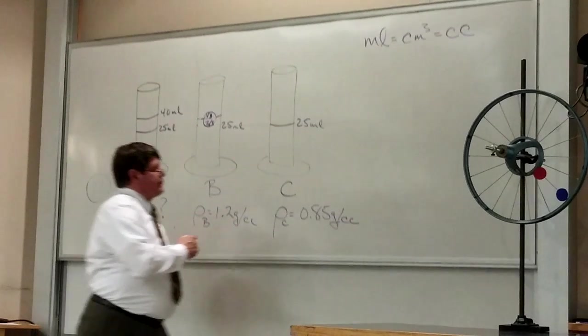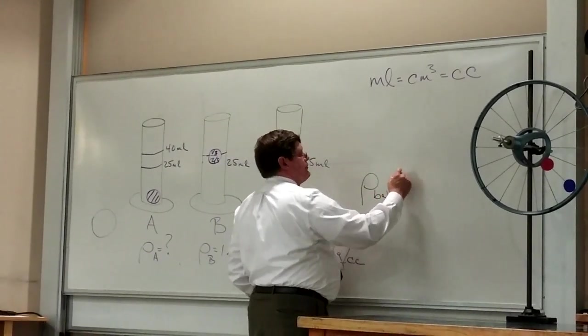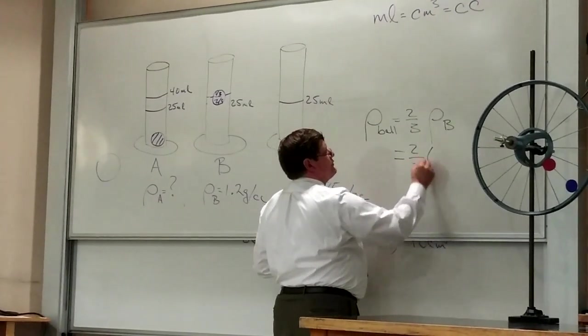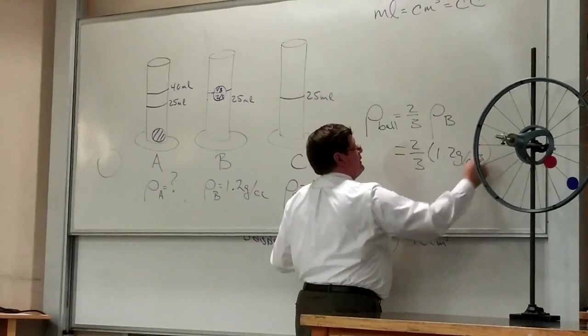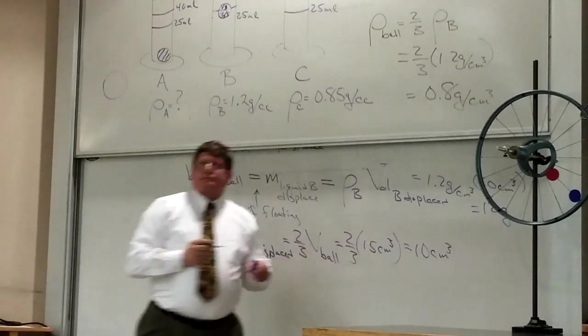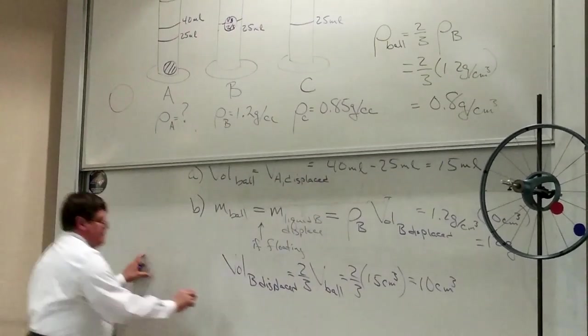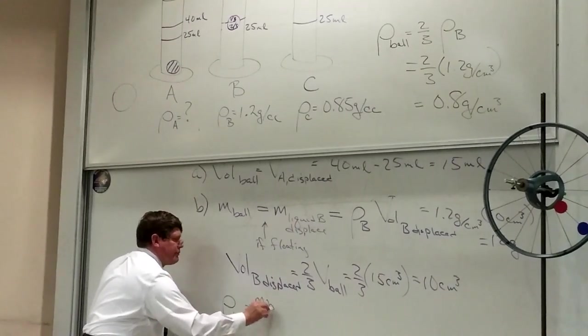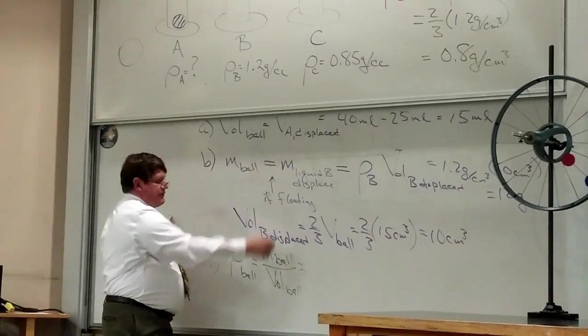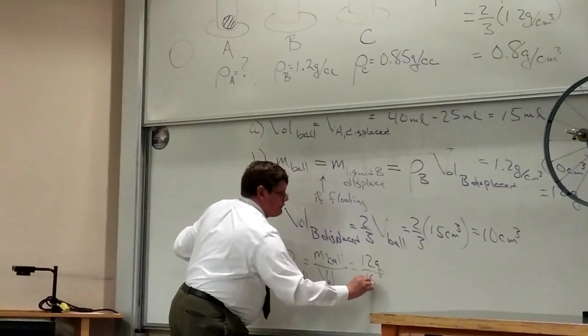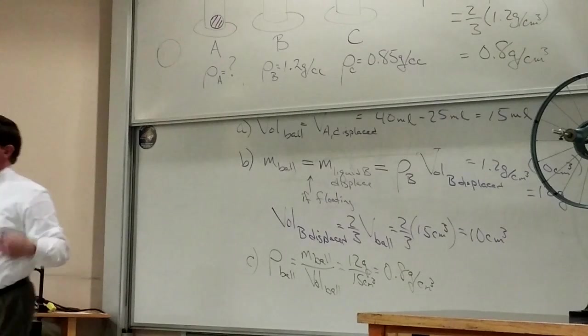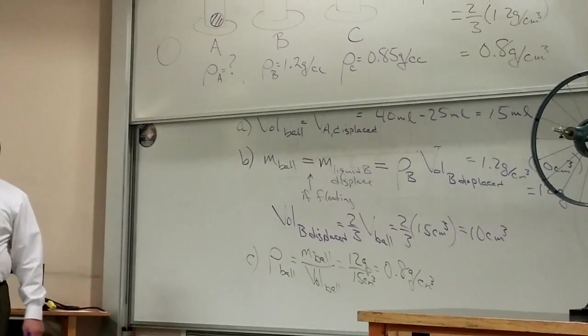If two-thirds of that ball is submerged, that means that the density of the ball is going to be two-thirds of the density of the liquid. And I'm told that the liquid has a density of 1.2 grams per centimeter cubed. So that's going to be a density for the ball of 0.8 grams per centimeter cubed. Now if I know the density, remember the density of the ball is just the mass of the ball divided by the volume of the ball. If I did it this way, that would be 12 grams over 15 centimeters cubed or 0.8 grams per centimeter cubed. If I went that approach, I would find the density first and then I could go backwards to find the mass of the ball. Either way.